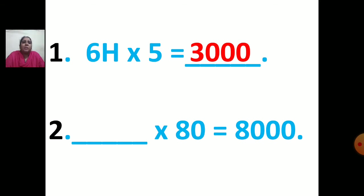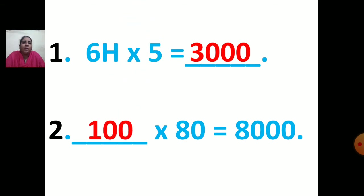Now second question: dash multiplied by 80 equals 8,000. In the table of 8, when you get 8 — 8 ones are 8 — you get 1. And how many zeros are there in 8,000? 3 zeros. In 80 there is 1 zero. So 3 minus 1 gives 2 zeros remaining. After writing 1, you put 2 zeros, so your answer will be 100. That is, 100 multiplied by 80 equals 8,000.